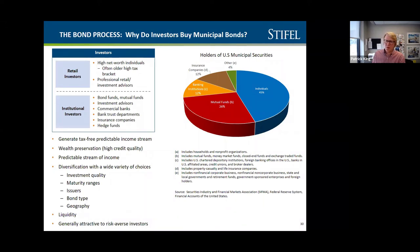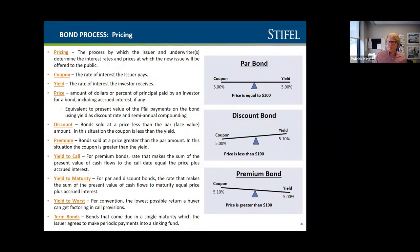Different investors have different objectives, and all have different requirements relative to credit quality and interest rates. Here is a list of terms around the bond pricing process. Important ones at the top are coupon, yield, and price. Something very commonplace in today's market is the idea of a premium bond, where the coupon is higher than the yield — in some cases dramatically higher, such as a 5% coupon for a bond that yields 1.5%.